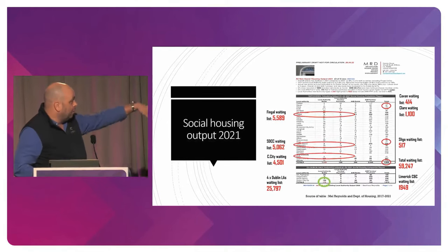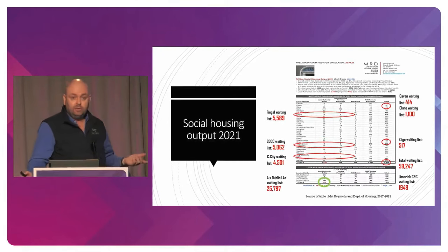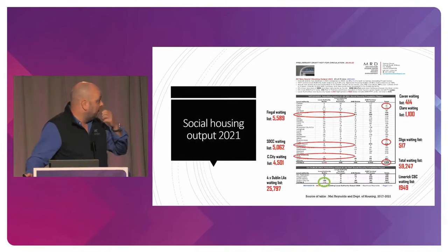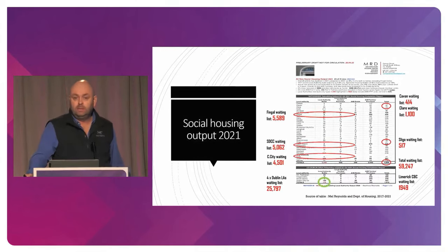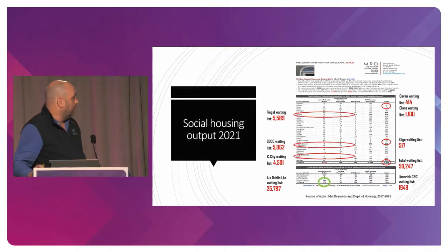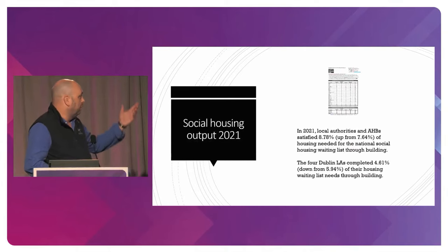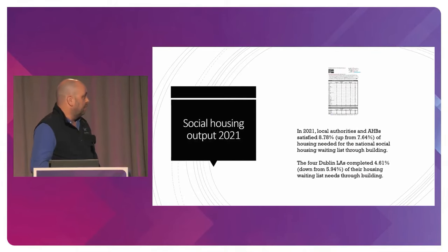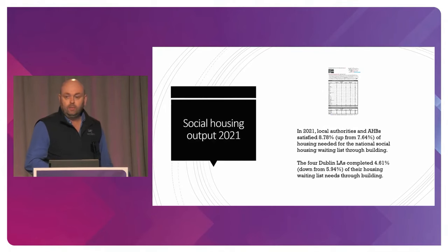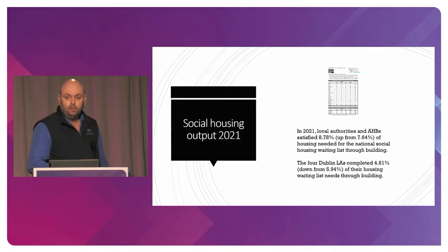The small counties have issues too — you think it's just Dublin, Waterford, Galway and Limerick. Clare built 30-something houses last year but has 414 households on the waiting list. The same with Cavan, Sligo, Limerick — every county has its own issues. In 2021, local authorities and AHBs satisfied less than 9% of the total housing need. Dublin was less than 5% of its total housing need requirement. The heavy lifting has been done by the approved housing bodies.